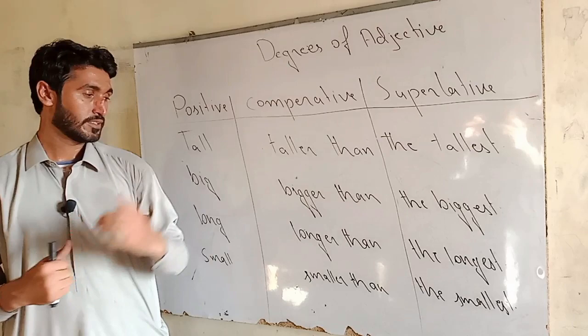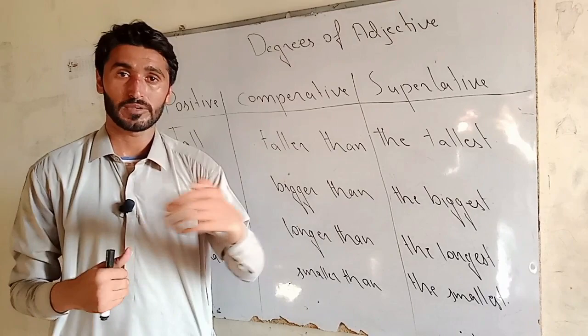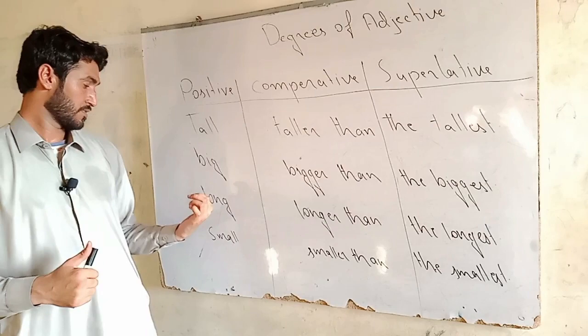The second adjective is big. I have a big car — there is no comparison. Tariq has a bigger car than mine — there is comparison of two things. Ali has the biggest car — there is comparison of three or more than three things.